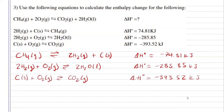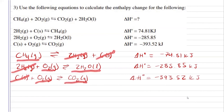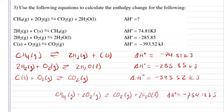Seeing what cancels — I'm going to cancel out my two moles of hydrogen, one mole of carbon on each side. And I'm left with one mole of methane, one mole and one mole of oxygen, so two moles of oxygen, two moles of water, and one mole of carbon dioxide. Which is exactly what the reaction calls for. So the enthalpy for my final reaction would just be negative 754.18 kilojoules.